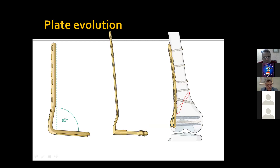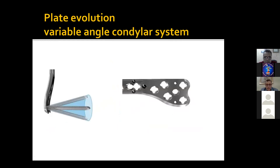The evolution of implants: we had the 95-degree blade plate in the 1990s and early 2000s, then the DCS, and now the LCP — the locked compression plate. What's new is a variable angle device to allow locked screws to be placed in different directions. This is very important because a screw with a fixed direction near the articular surface may penetrate it. The development of a plate with a variable angle device is a valuable addition to our treatment strategies.